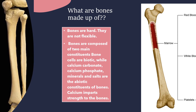Biotic means living (sajiv) and abiotic means non-living (nirjiv). The biotic components are bone cells — these include bone marrow, red blood cells, white blood cells, and platelets. The abiotic components are calcium carbonate, calcium phosphate, minerals, and salts. Calcium imparts strength to the bone and is the main mineral component.